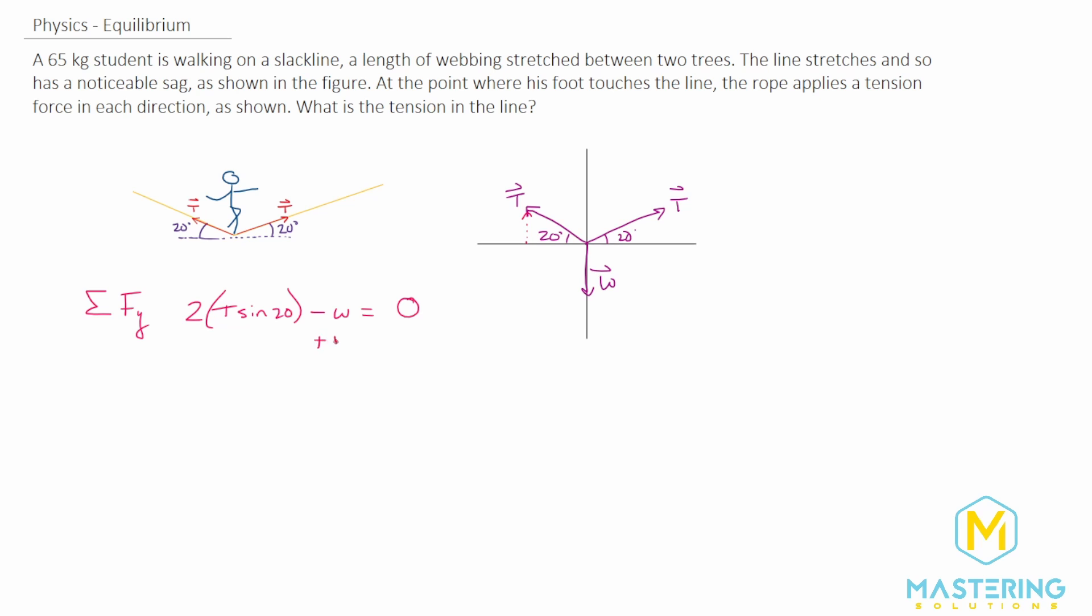We can add the weight to the other side, so we have 2T sine 20 equals weight. To isolate T, we divide both sides by 2 sine of 20.